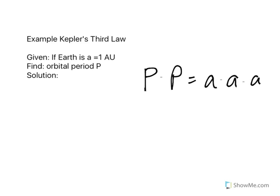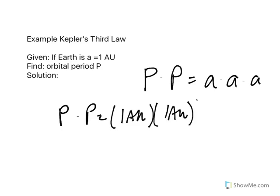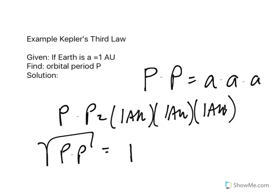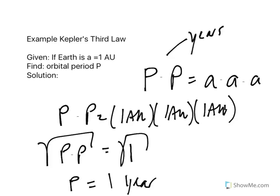Multiplying out: 1 times 1 times 1 equals 1, so P times P equals 1. Taking the square root of both sides, P equals 1, and the unit for P is years. So P equals one year. This makes sense — the orbital period of Earth is one year. That helps us understand Kepler's third law.